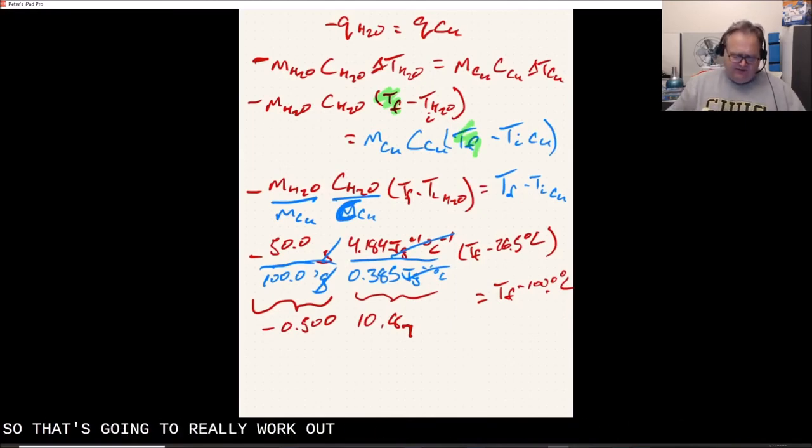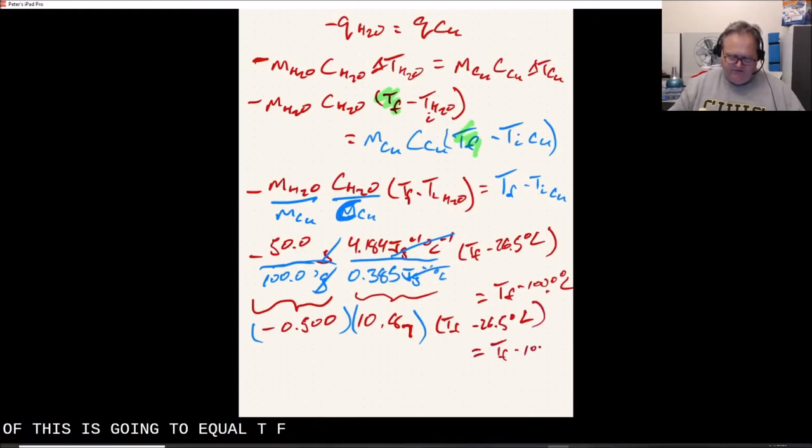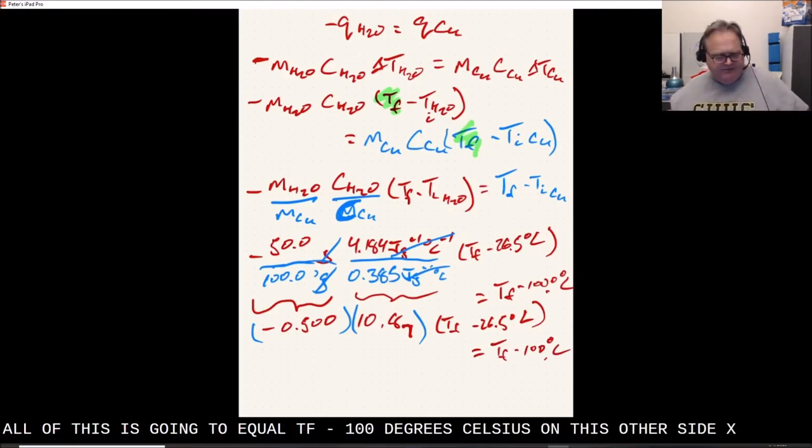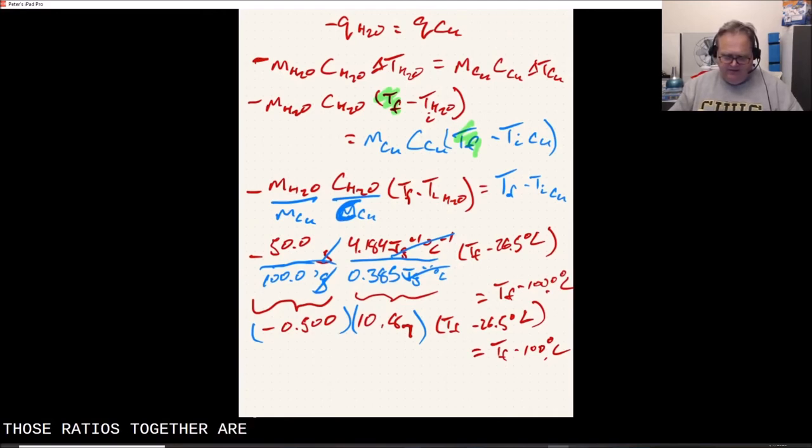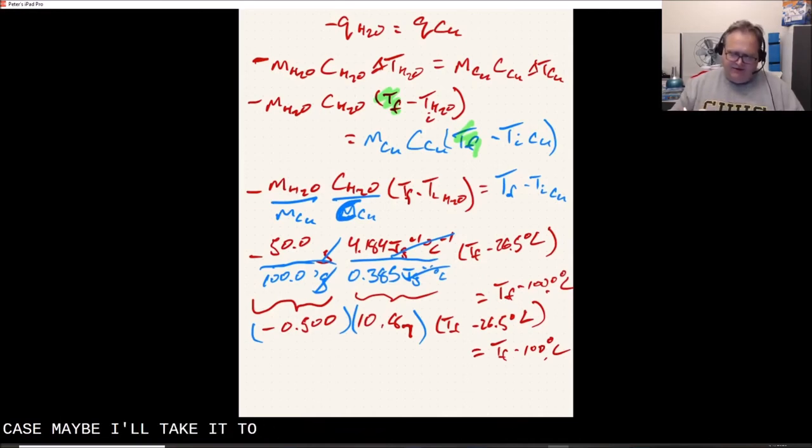I would have to put almost 11 times more heat into a given amount of water to raise its temperature by the same amount as the same amount of copper. And so that's going to really work out for us in the long run. Let's keep these as grouped ratios, and we've got our final bits here, Tf minus 26.5 degrees Celsius.